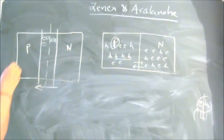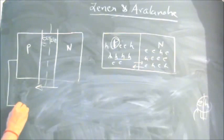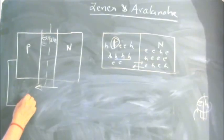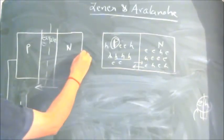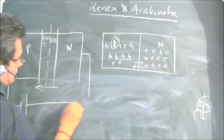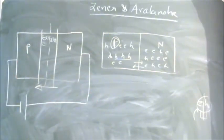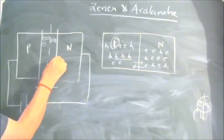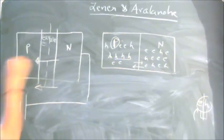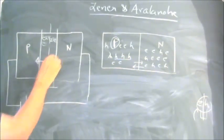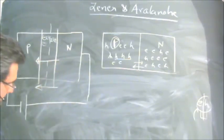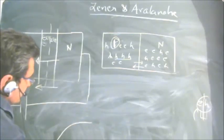When we apply a reverse bias — P connected to the negative terminal and N connected to the positive terminal — the only current which takes place is due to the minority carriers. This electric field was opposing the diffusion current and created the potential barrier.